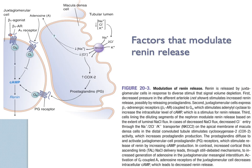This shows the factors that modulate renin release. Renin is the first one which converts angiotensinogen to angiotensin I. There is a beta-1 receptor connection — beta-blockers also affect renin release indirectly, so they also affect the RAS system, not just a pure effect on the heart. There are also other targets like adenosine and prostaglandin receptors which could be used as drug targets, and there are drugs under clinical investigation.